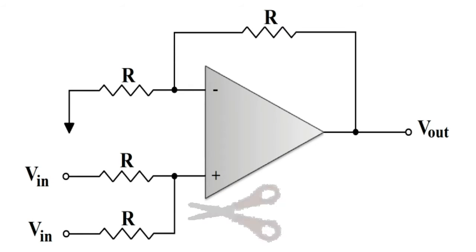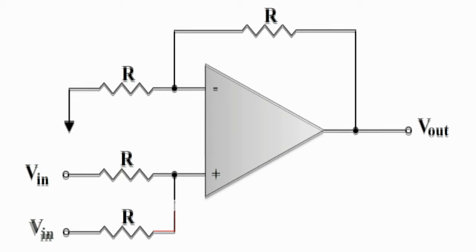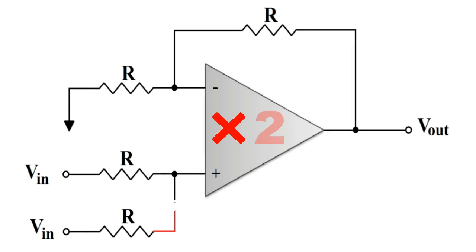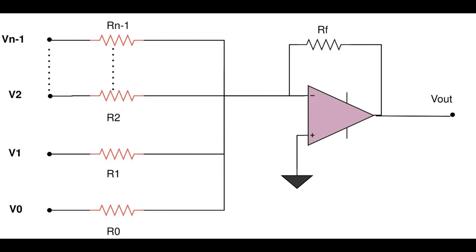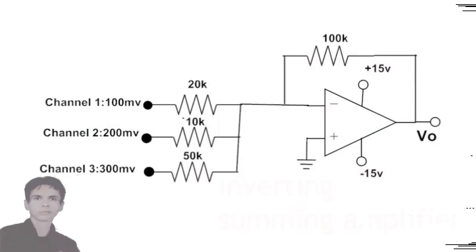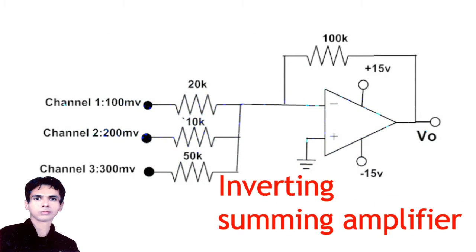The big disadvantage of the non-inverting summing amplifier is that if you cut off one of the inputs, the gain of the circuit is doubled for the remaining connected channel. This is not the case with the inverting summing amplifier as it creates a virtual ground summing point.